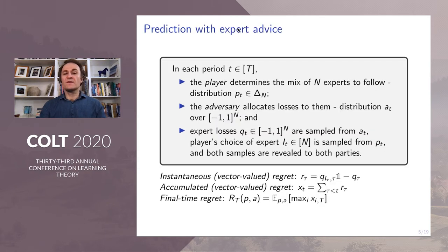A representative definition of prediction with expert advice is the following. In each period t in [T], the player determines the mix of N experts to follow by choosing a probability distribution over N outcomes. The adversary allocates losses to them by choosing a distribution over an N-dimensional hypercube. Expert losses and player's choice of the expert are sampled from the respective distributions, and both samples are revealed to both parties.